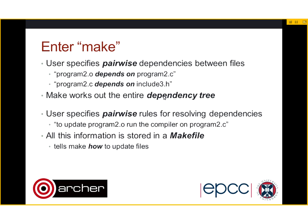The user also specifies pairwise rules for resolving dependencies. I've said program2.o depends on program2.c — but how do you create it? You have to tell the tool: to update program2.o, run the compiler on program2.c. These are the two stages in using Make: specify how files depend on each other in a pairwise manner, and specify how to generate a file from another file. All this information is stored in a Makefile.